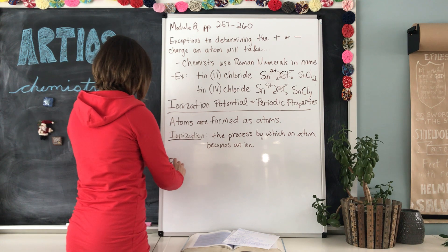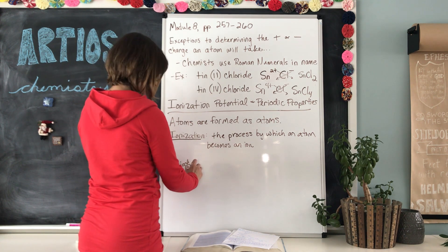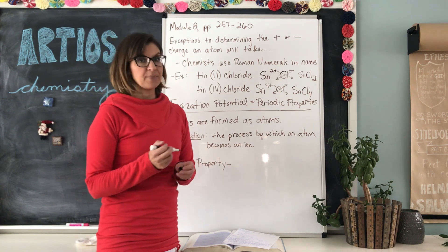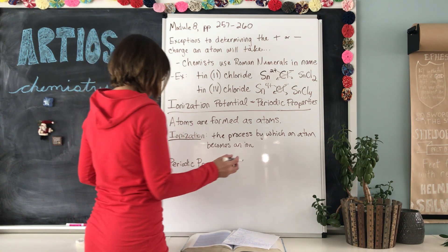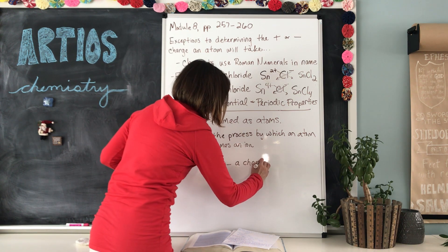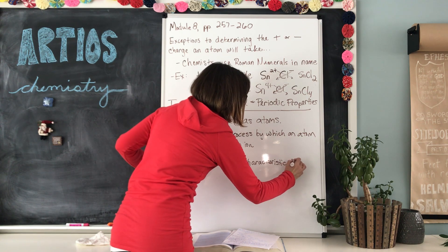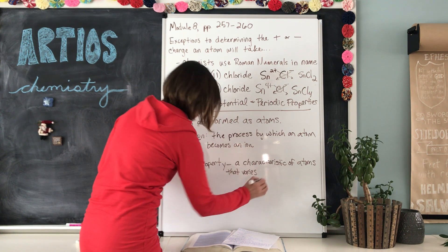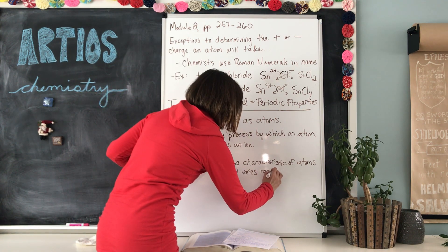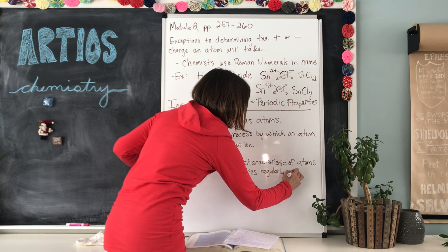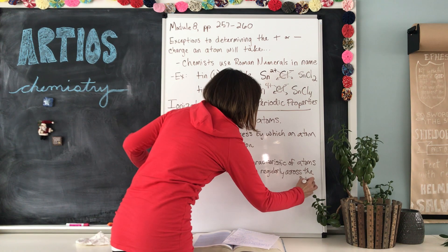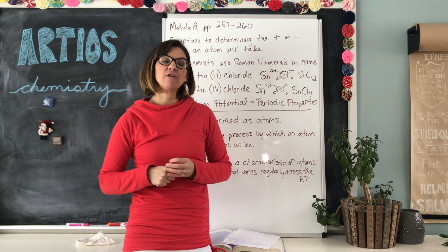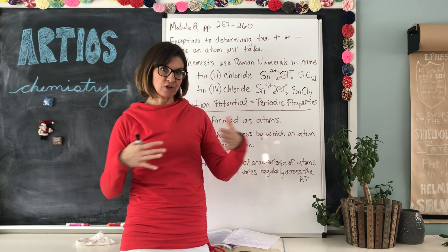Next we need to understand ionization to talk about some periodic properties. A periodic property is a characteristic of atoms that varies regularly across the periodic table — which of course stands for our beloved periodic table. So a periodic property is something about atoms that changes regularly across the periodic table.